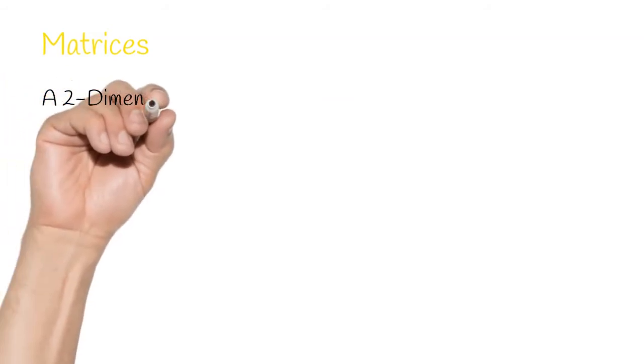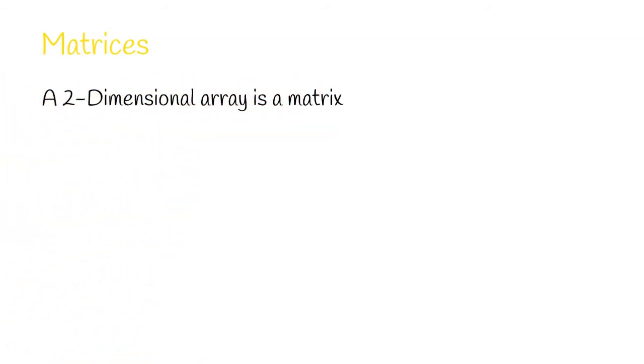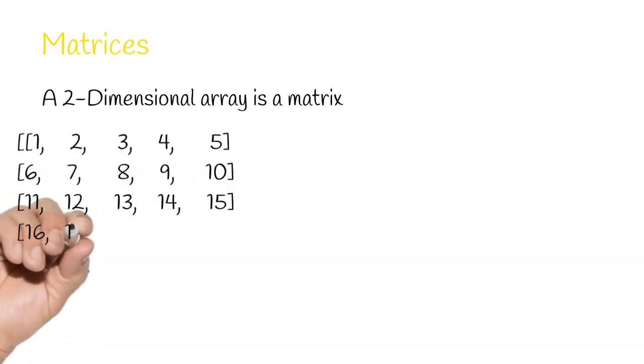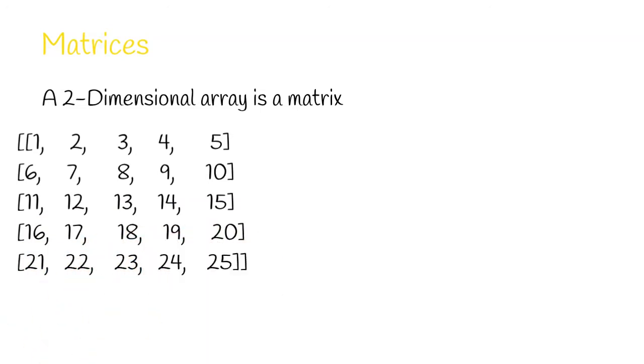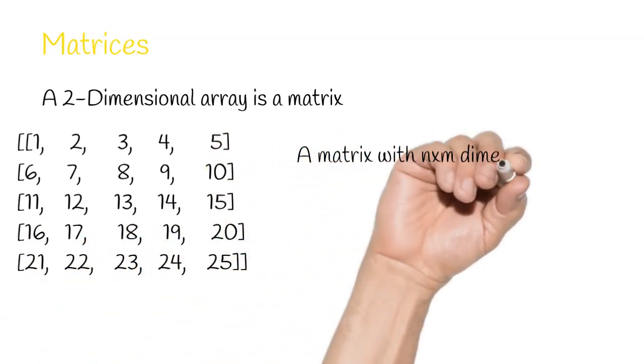Matrix is a two dimensional array having n number of rows and m number of columns. In our example, n and m both are 5. So, it's a 5 cross 5 matrix.